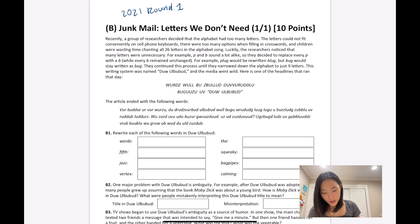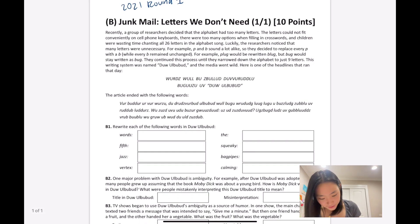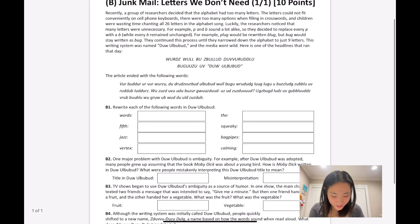Let's get right into this 10-point problem. Recently, a group of researchers decided that the alphabet had too many letters. The letters couldn't fit conveniently on cell phone keyboards, there were too many options when filling in crosswords, and children were wasting time chanting all 26 letters. Luckily, the researchers noticed that many letters were unnecessary - for example, p and b sound a lot alike. So they decided to replace every p with a b while every b remained unchanged. For example, 'plug' would be rewritten as 'blug' but 'bug' would stay as 'bug.' They continued this process until they narrowed down the alphabet to just nine letters, and this writing system was named Duw Ulhubud.